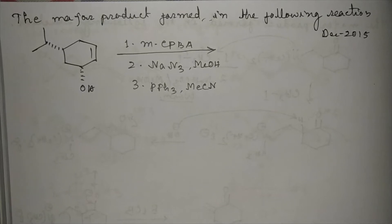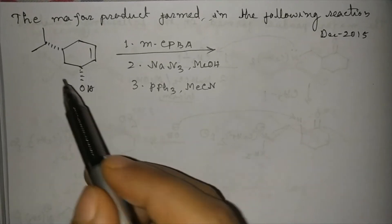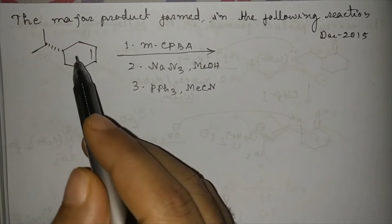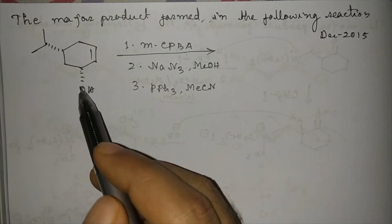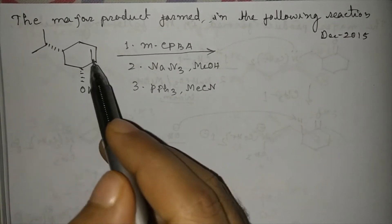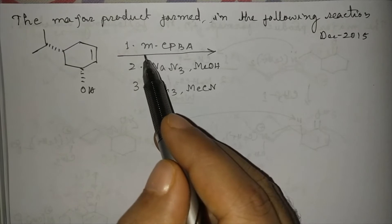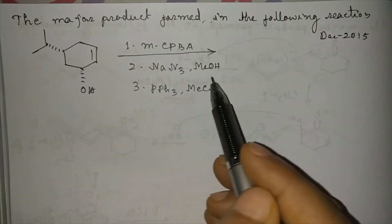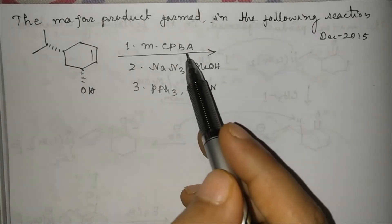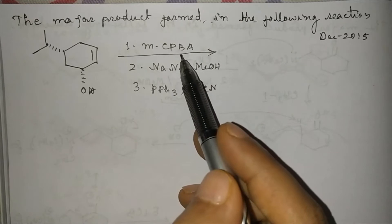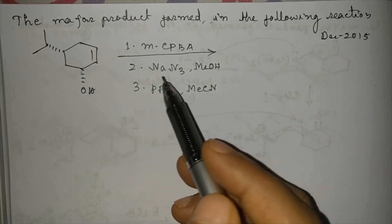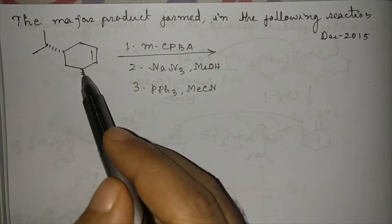Today I am going to discuss one important question: the major product formed in the following reaction. Here is a cyclohexyl system which has one OH group below the plane, an isopropyl group, and a double bond. It is treated with first mCPBA (metachloroperoxybenzoic acid), then NaN3, then PPh3. mCPBA is an epoxidation reagent, so epoxidation will take place. The OH group is in the allylic position.